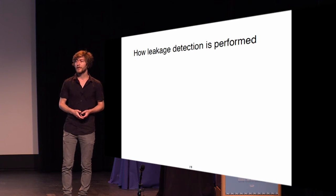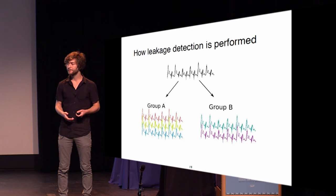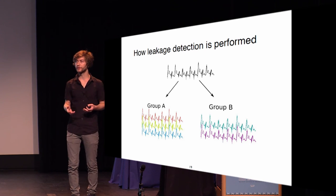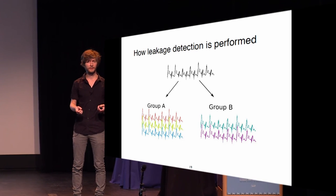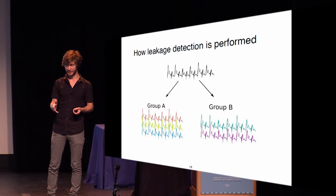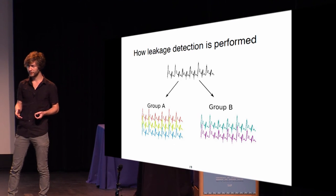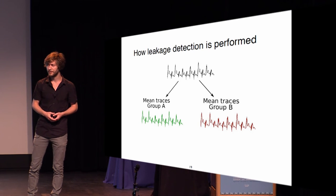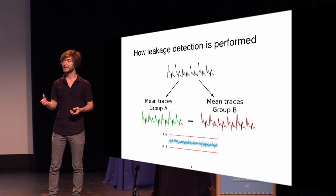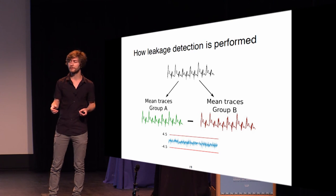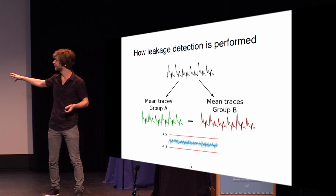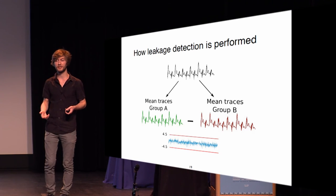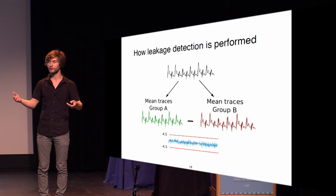For leakage detection we use TVLA. Very roughly: we take a lot of traces and group them into two sets — one set corresponding to a fixed masked input (we choose the zero plaintext) and the other set corresponding to a random input value. We take the mean and the difference of that mean, and if in the first order that statistic falls between our confidence level of plus and minus 4.5, we can be confident that security is achieved.